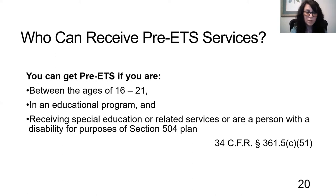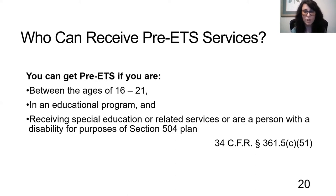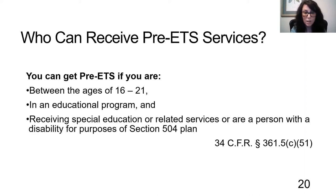Pre-employment transition services are provided to anyone who meets the criteria: you're between the ages of 16 and up to the day before your 22nd birthday, you are in an educational program of some kind — public school, charter school, private school, community college, or other educational program — and you're someone receiving special education or related services, or who would be eligible for a Section 504 reasonable accommodations plan, whether or not you're currently receiving those services.